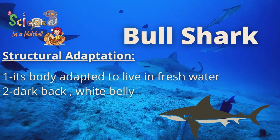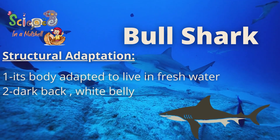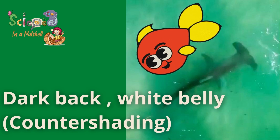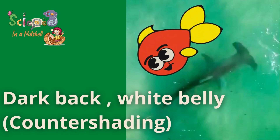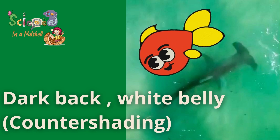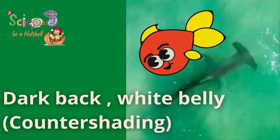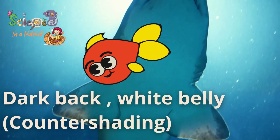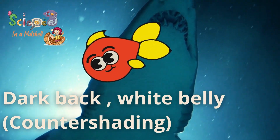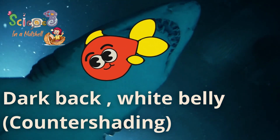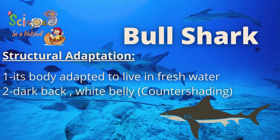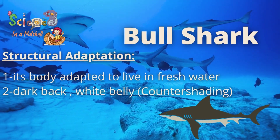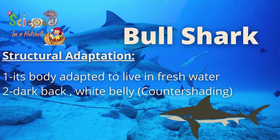The bull shark has a dark back and a white belly. When an animal swimming above the bull shark looks down into the ocean, it may not see the shark in the shadows due to its dark back. But when an animal swimming underneath the bull shark looks up, the shark may blend into the bright light of the sun due to its white belly. This camouflage strategy is called counter shading — repeat after me: counter shading.